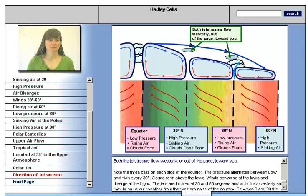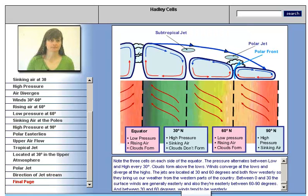Both jet streams flow westerly, or out of the page towards you. Note the three cells on each side of the equator. The pressure alternates between low and high every 30 degrees. Clouds form above the lows. Winds converge at the lows and diverge at the highs. The jets are located at about 30 and 60 degrees, and both flow westerly, so they bring us our weather from the western parts of the country.